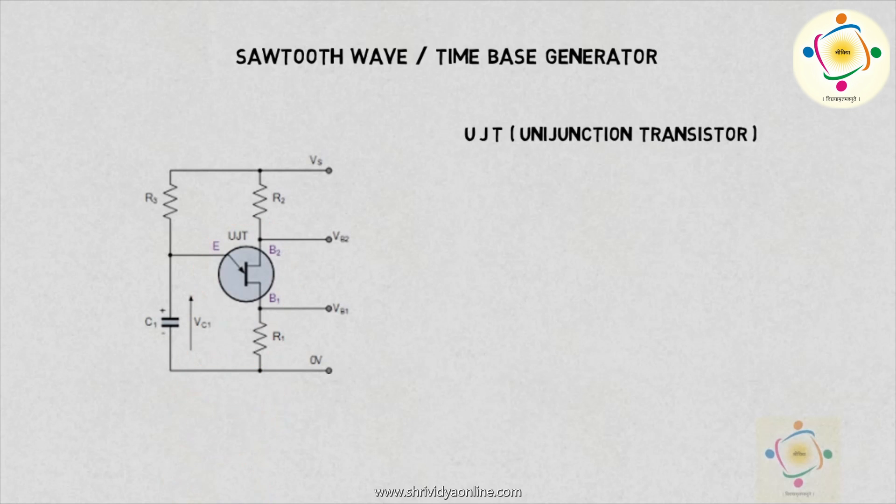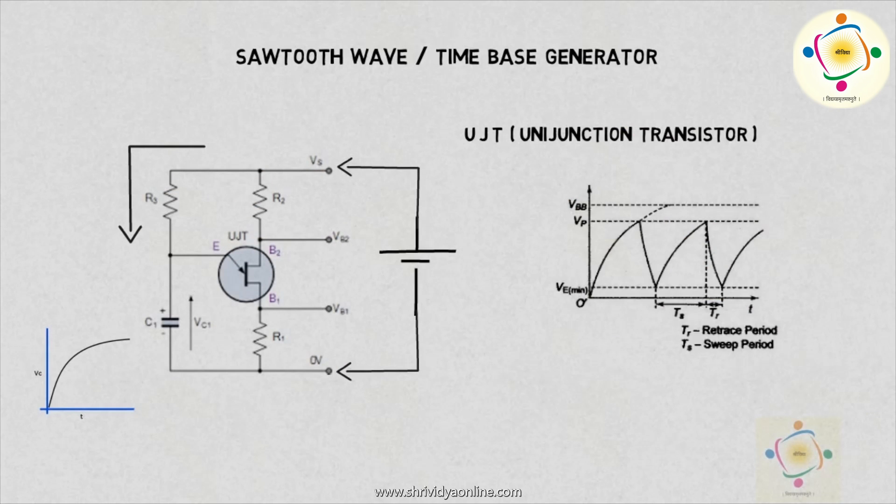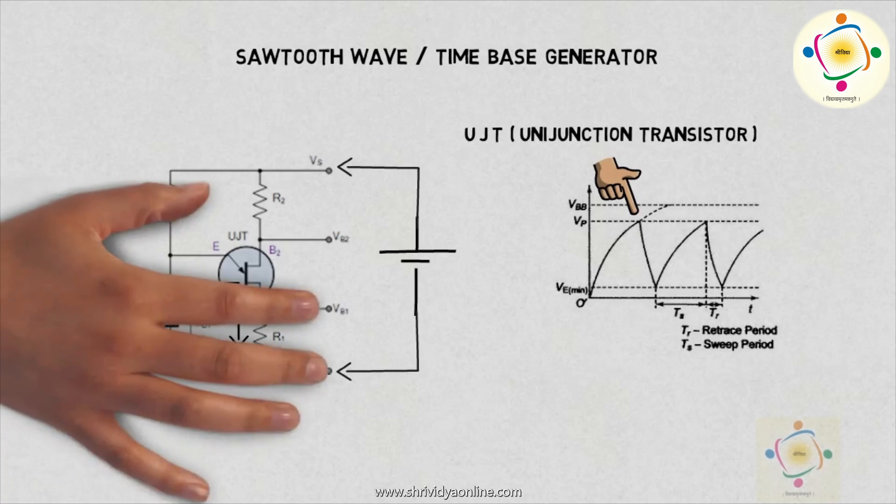When the supply is given to the circuit, capacitor C charges exponentially through resistor R. As the voltage on capacitor reaches VP, the emitter junction becomes forward biased and current will start to flow through this junction. Now the capacitor discharges.